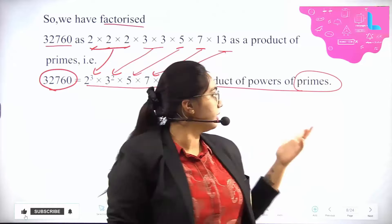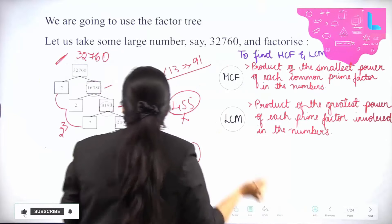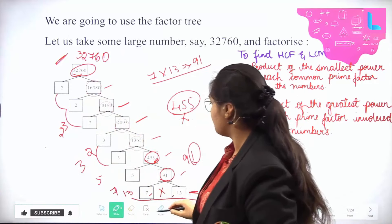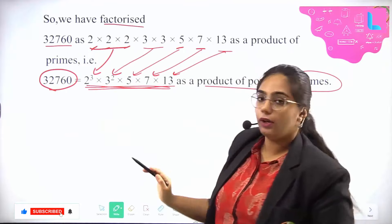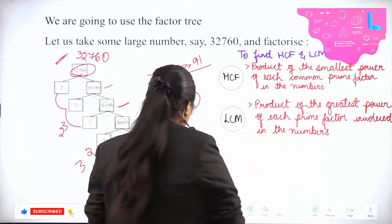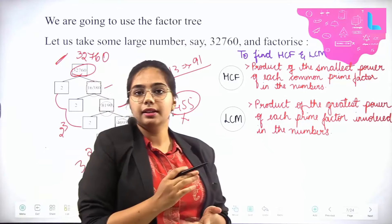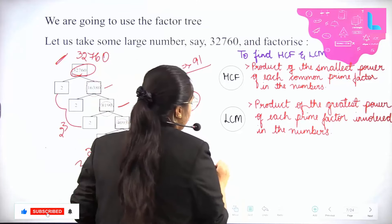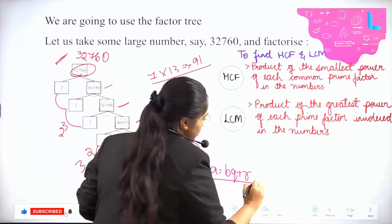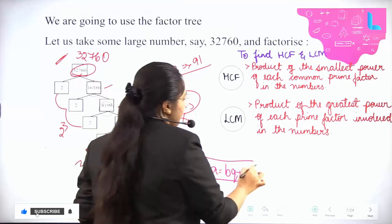Any composite number should be expressed as a product of primes. The whole motive was: this was a composite number, and you have to keep dividing until everything is a product of primes. We have already seen in Euclid's division algorithm how to find — that is, A = BQ + R — which was used for finding HCF and LCM.